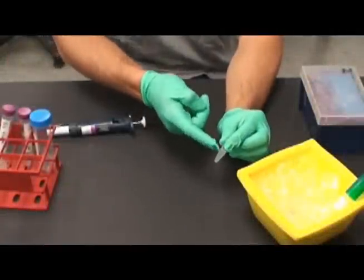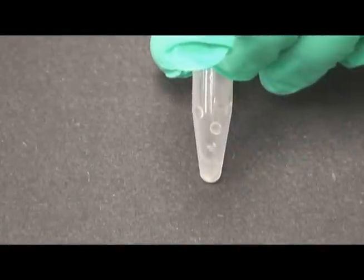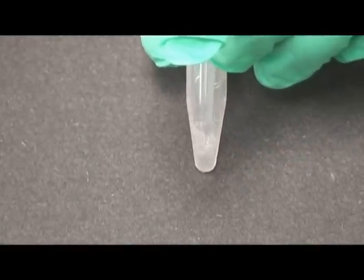As before, pellet the cells at the centrifuge for 2 minutes. Then, resuspend them, this time in only 200 mL of calcium chloride as shown here.